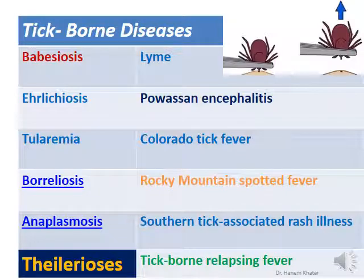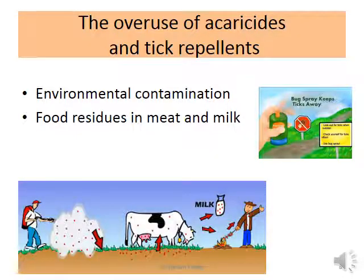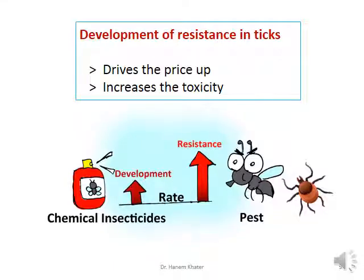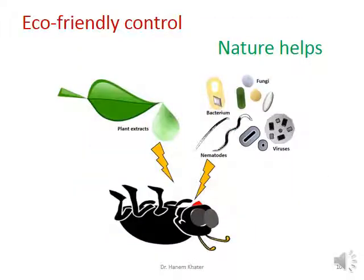Here are some examples of tick-borne diseases, which include babesiosis, Lyme, anaplasmosis, Rocky Mountain spotted fever, tularemia, theileriosis, and ehrlichiosis. The overuse of acaricides and tick repellents has resulted in environmental contamination besides food residues in meat and milk. Development of resistance in ticks drives the price up and increases toxicity. For sure, nature helps — we are looking for eco-friendly control strategies against ticks.